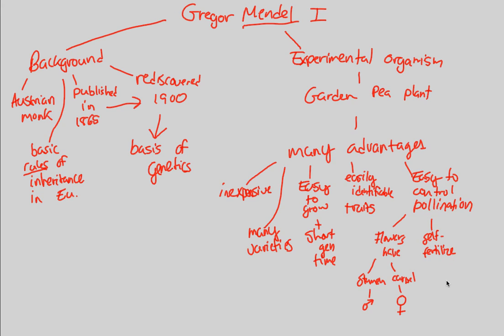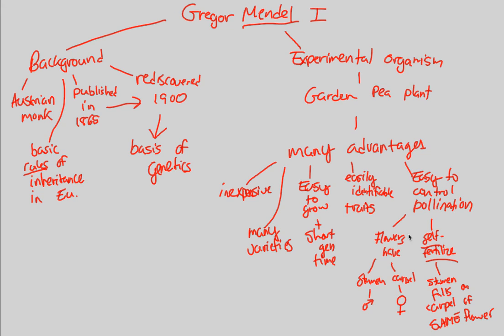Garden pea plants usually self-fertilize. This process of self-fertilization occurs when the stamen — the male part — falls on the carpel of the same flower. But you can actually control this natural process. You can manipulate it slightly by introducing what is known as cross-fertilization.